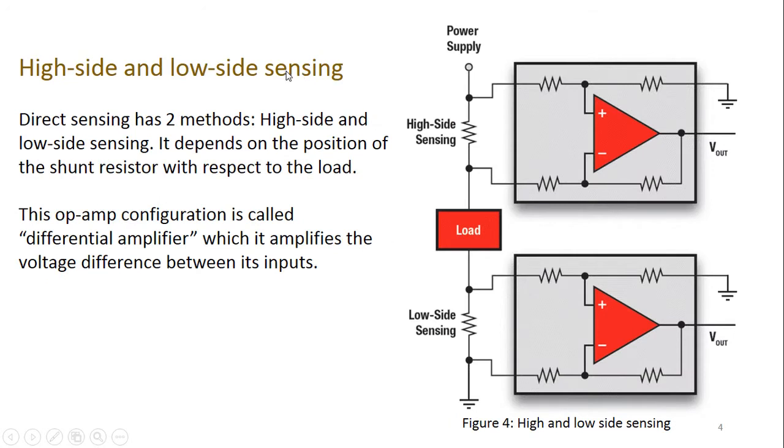Now as for this direct current sensing, there are two ways: high-side current sensing and low-side current sensing. It basically means whether your load is above or below the sensing resistor. This is called a sensing resistor. Here it is high side and here it is low side. In this low side you can actually get rid of this amplifier altogether in some cases.